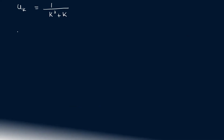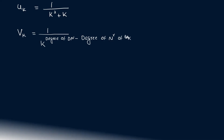So we are going to choose vk. We set vk equal to 1 by k raised to p, where p equals degree of denominator minus degree of numerator. The degree of denominator of uk equals 2, and numerator degree is 0, so p equals 2 minus 0 equals 2. Therefore vk equals 1 by k squared.